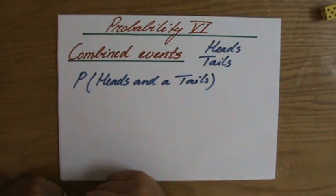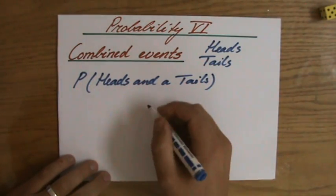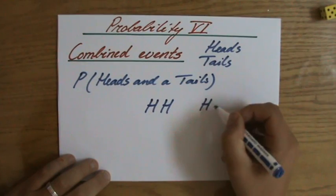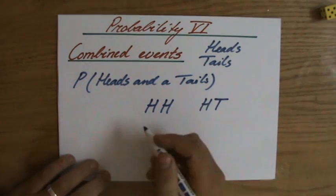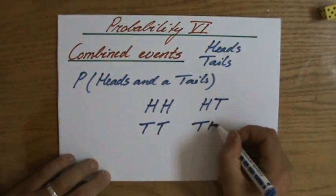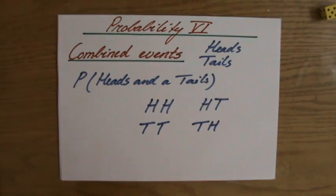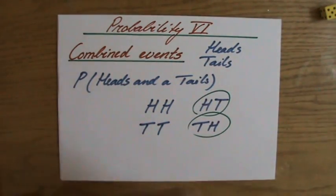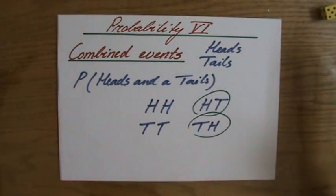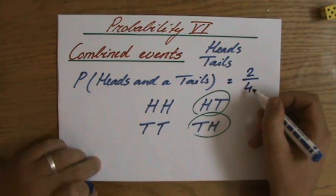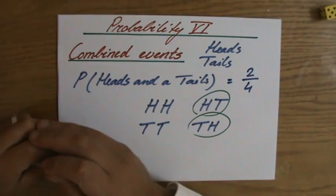Now, what are my possibilities? I could throw heads first and then heads again. I could throw heads first and then tails. I could throw tails first and then tails again. Or tails and then heads. So if they ask me, what is the chance that you throw a heads and a tails — well, that is two successes out of four possibilities. So that's a chance of one over two in this particular case.